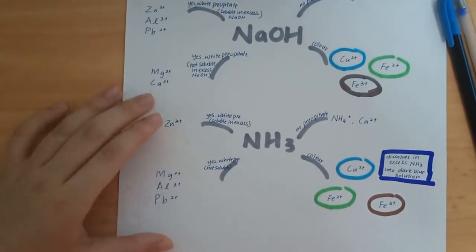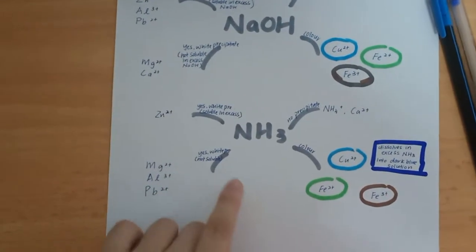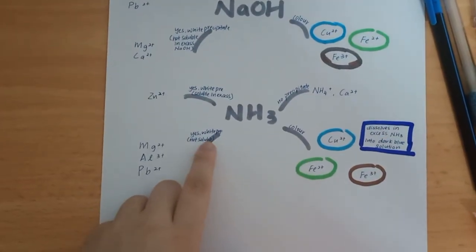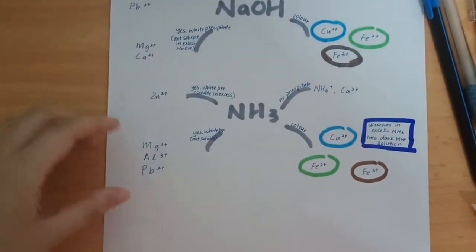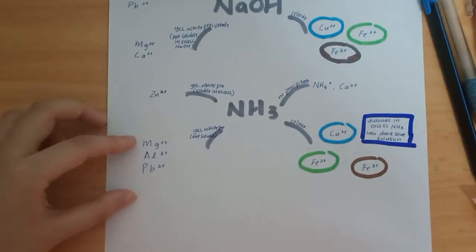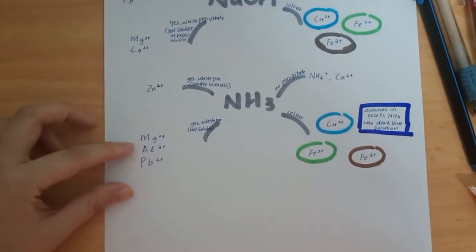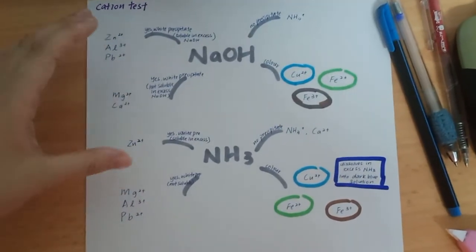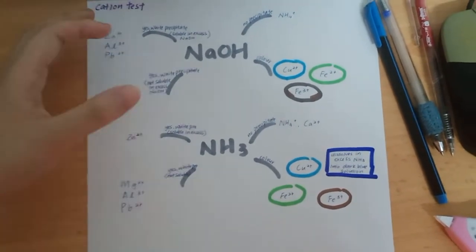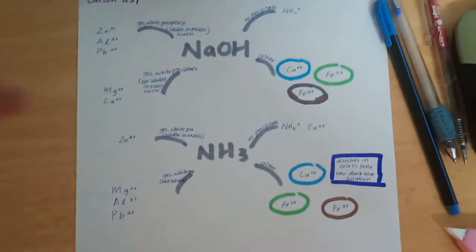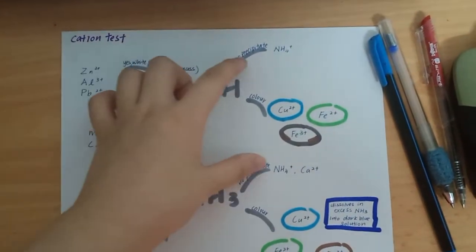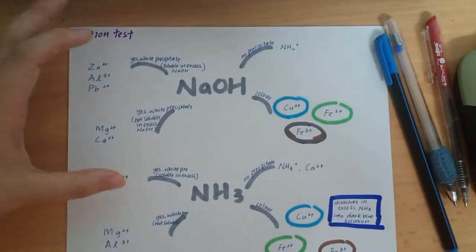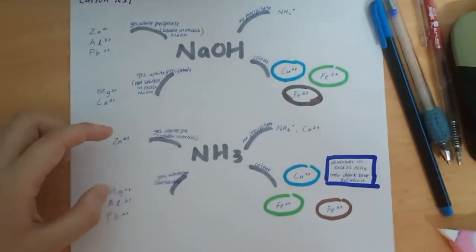This part is a little bit hard. For this yes white precipitate not soluble, which I remember as MAP - you see, M-A-P, Mg, Al, Pb. Just now I realized that it's actually the same cation as testing. So when you memorize this you basically already remember the whole thing.